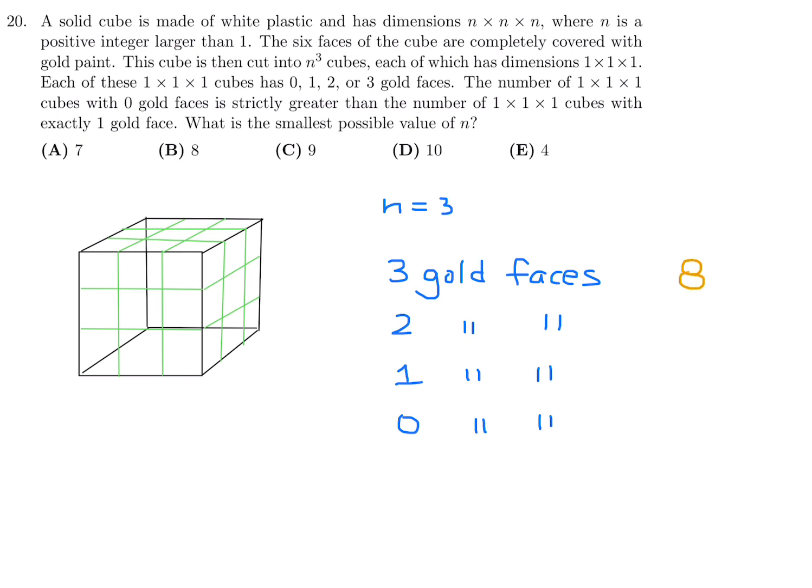Now let's talk about two gold faces. Two gold faces are these guys. That one, this one, and those ones we have to figure out in terms of n. It's going to be n minus 2. You're subtracting 1 and 2 from n. And then you have to multiply that by how many edges there are. So 1, 2, 3, 4, 5, 6, 7, 8, 9, 10, 11, 12. Every cube has 12 edges. So it's 12 times n minus 2.